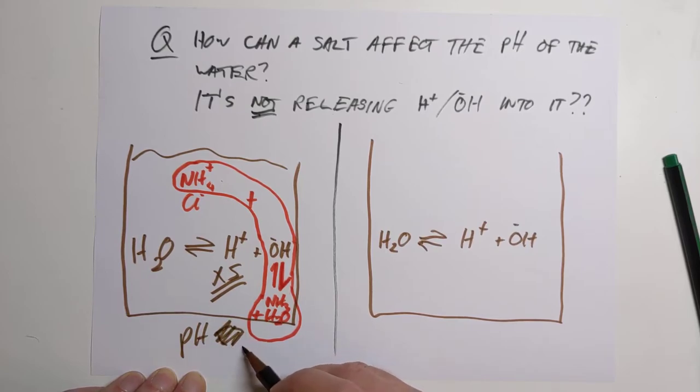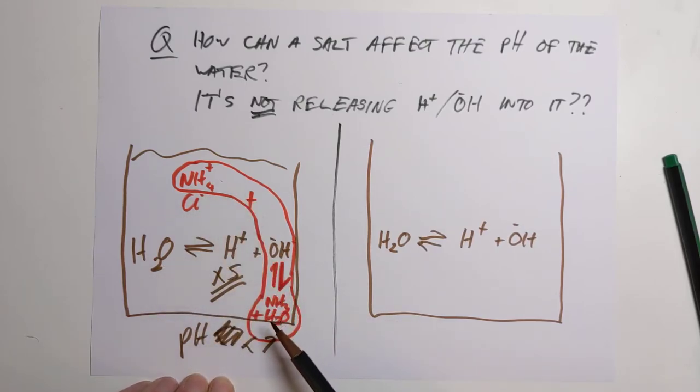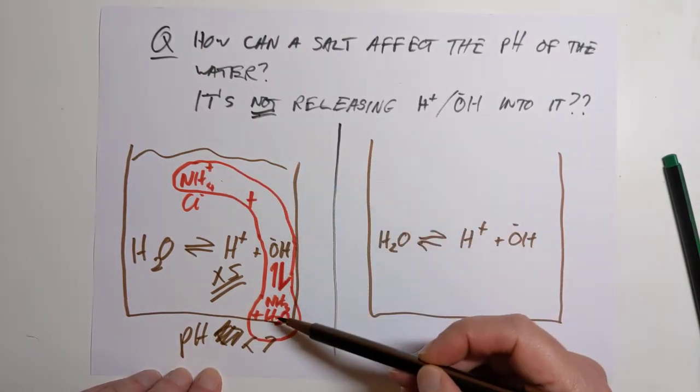So that's why ammonium chloride, putting it into a beaker of water, appears to be an acidic salt. It's not the salt that's acidic. It's quite cool chemistry.